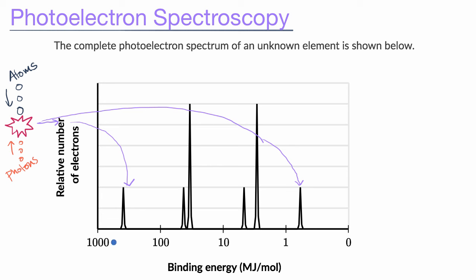One way to view the photoelectron spectrum is that it gives you a sense of roughly how many electrons have various binding energies. Binding energy increases as we go to the left, because binding energy is inversely proportional to the kinetic energy of the electrons as they get knocked off. The spike at the extreme left corresponds to the innermost electrons, and then spikes further right correspond to electrons with progressively lower binding energies.